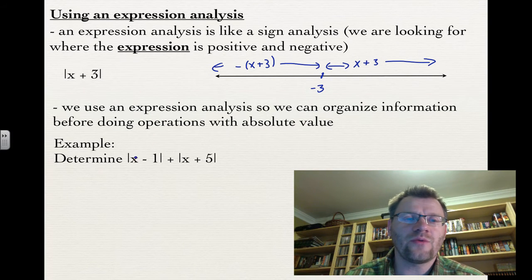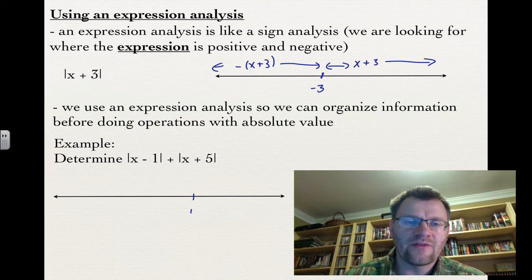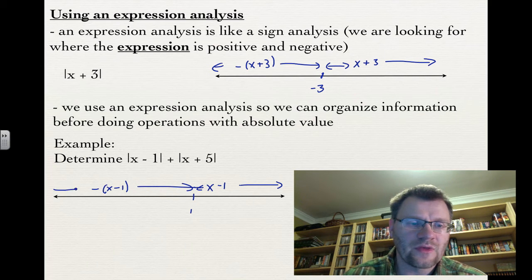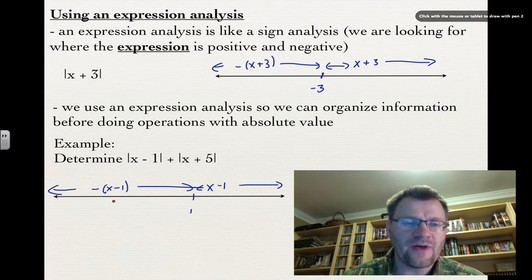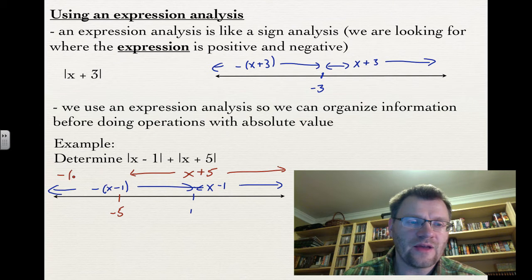Now we'll find the absolute value of x minus 1 plus the absolute value of x plus 5 using expression analysis with two key values. For x minus 1, the key value is positive 1: on the right it's positive (x minus 1), and on the left it's negative (x minus 1). For x plus 5, the key value is negative 5: on the right it's positive (x plus 5), and on the left it's negative (x plus 5).